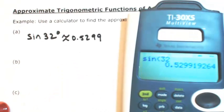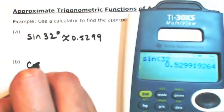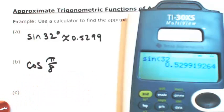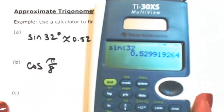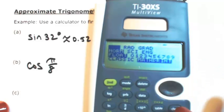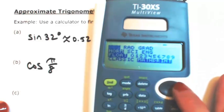Okay, let's try one with radians. Let's say I want cosine of pi over 8. Since I have radians, I need to change my mode again. So this time I'll make sure I have radians.